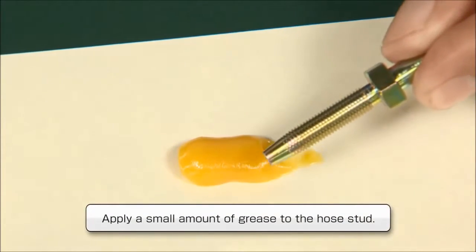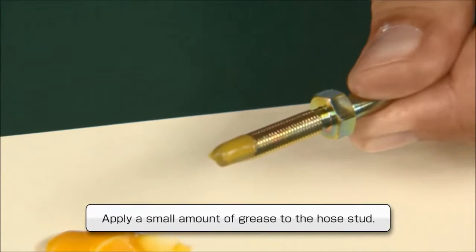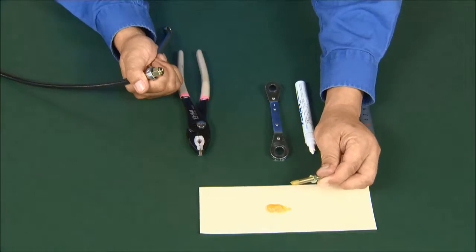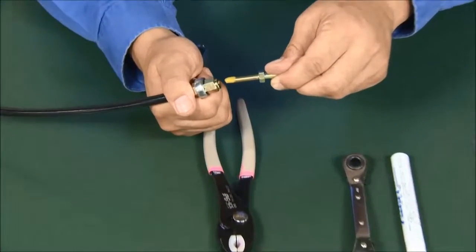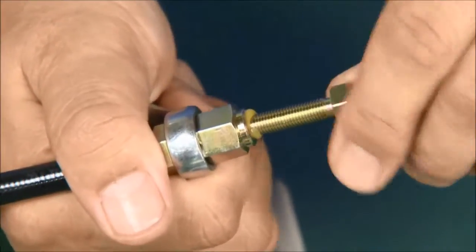Apply a small amount of grease to the hose stud. Screw in the hose stud clockwise using the 10mm ratchet wrench.